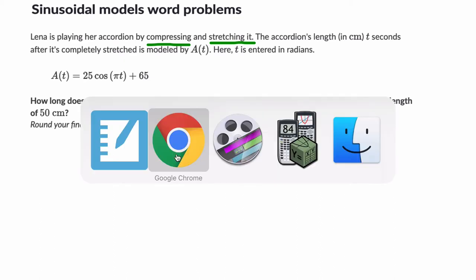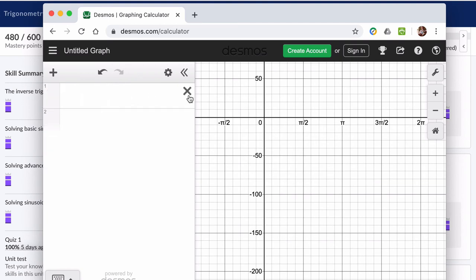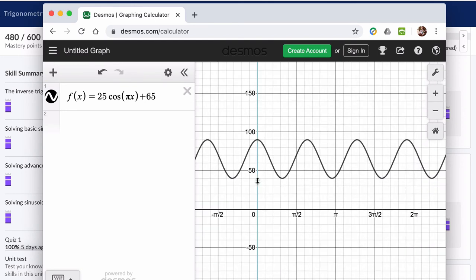I think I have Desmos open still. Here it is from the last problem. And what I'm going to enter, I wrote it down, is our function. I'm just going to call it f of x equals 25 cosine of πx plus 65. We just get a sense of what's happening in this function here.